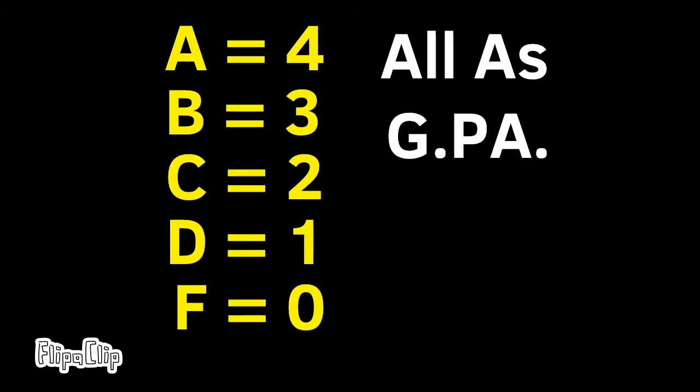If you earned all A's, your GPA would be a 4.0. That's called earning straight A's.